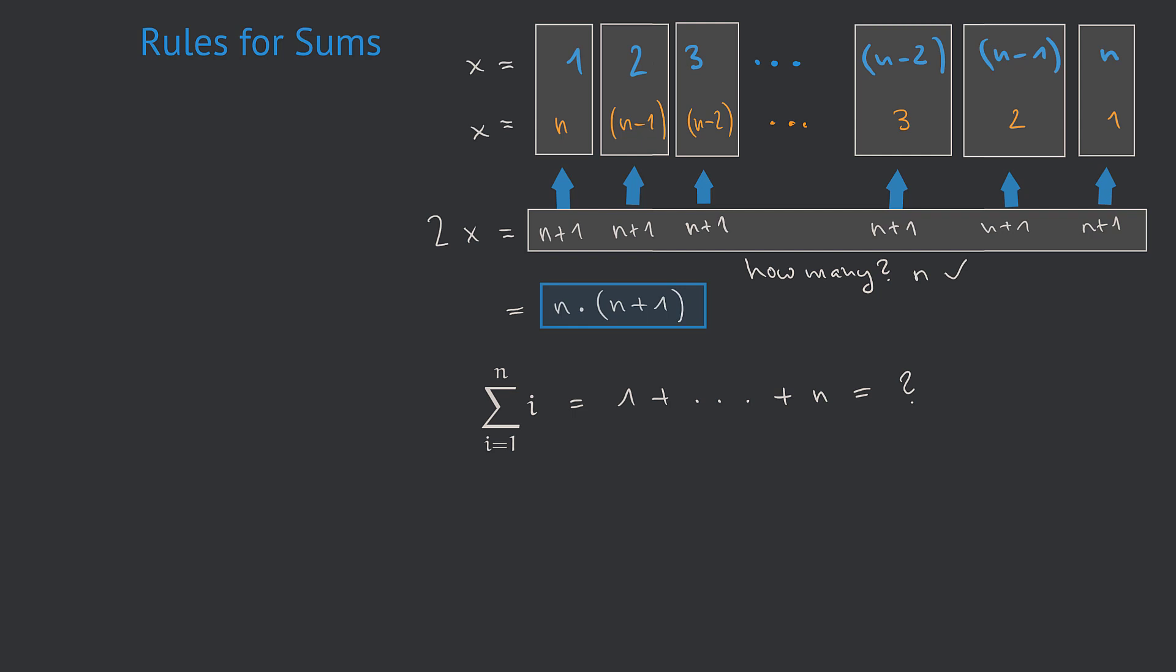Altogether, that gives us the following equation for our unknown x. Remember that x itself is a variable which we introduced to shortly write exactly the sum we are looking for. So if we take the equation within the blue box and divide it by 2, we get an expression for x. So that is exactly the formula the Young Gauss found. For any natural number n, this gives us the sum of all natural numbers running from 1 up to n.